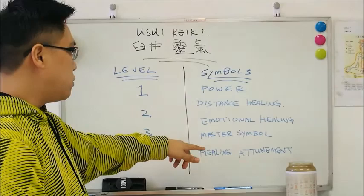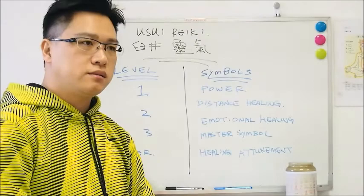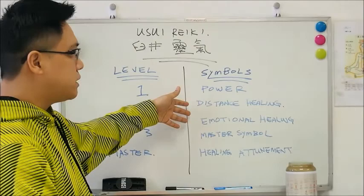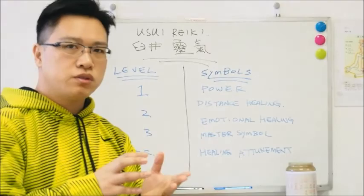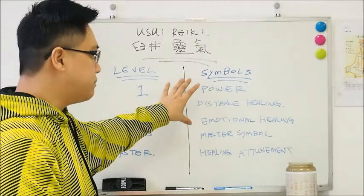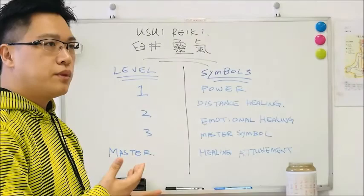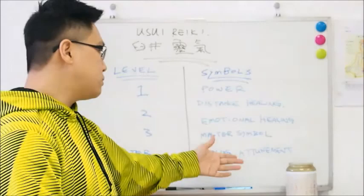In level 3, you attune to the master symbol, which acts as an amplifier of the amplifiers. The three symbols already amplify and direct energy for specific purposes, and the master symbol enhances the power of all those symbols. At master level, you learn how to attune students at levels 1, 2, 3, and master level, and also how to perform healing attunements.